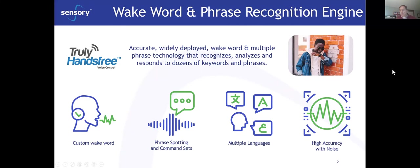I'm going to introduce you to two of our different engines today. Quickly, we have three main engines at Sensory. The first is Truly Hands-Free — our wake word and phrase recognition engine. It's accurate and widely deployed into billions of products. We support wake word and multiple wake word and phrase-spotted commands. We start with either a custom wake word or standard wake words from Amazon, Google, Siri, etc., and we support many of the internet giants today. We support 24 languages covering more than 45 different markets and dialects.